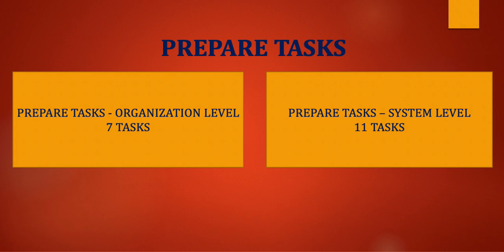Before the organization starts putting together the risk management framework steps, there is a need to determine the authorization boundary. Authorization boundary means the scope of protection — what are the components that make up the system we want to protect? How many databases are involved? How many applications? What kind of operating system? Who is the authorizing official for this system? What is the boundary that it cuts across? Authorization boundary is one of the essential tasks that needs to be carried out at the system level under the preparation task.